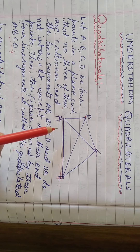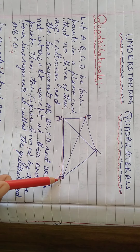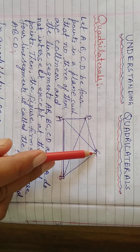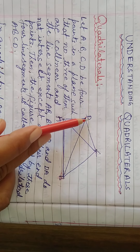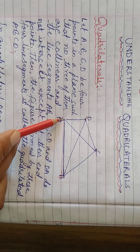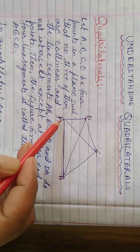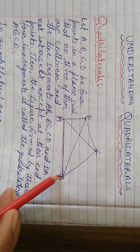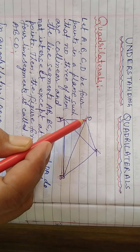In this quadrilateral, AB is a side, BC is a side, CD is a side, and DA is a side. AC and BD are the diagonals.